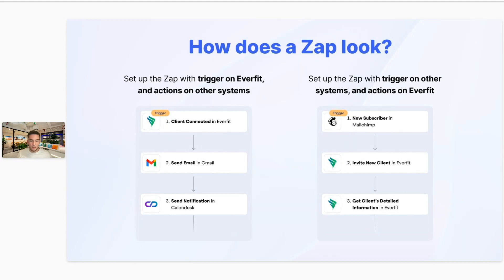The other Zap has Everfit as the action. The trigger here is a new subscriber in MailChimp. You can then have the action as inviting the new client to Everfit and getting their client information, such as their email, first name, last name, and a few other vital pieces of information.